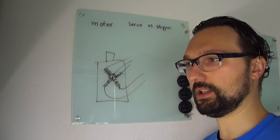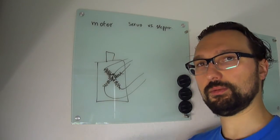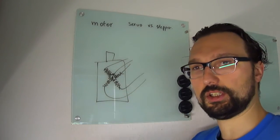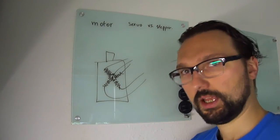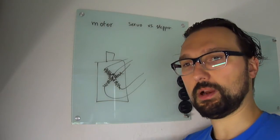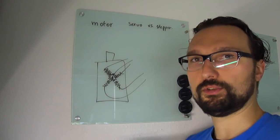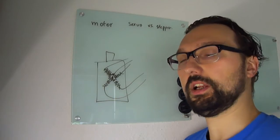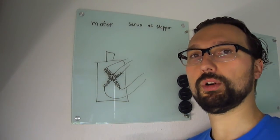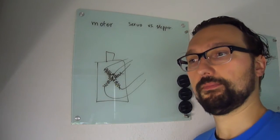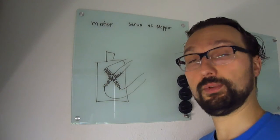The disadvantage of this way is that you have no absolute reference to where you are. So basically when the whole system starts you say well this is the zero position, and then you do step forward, step forward, step forward, step backwards, step forward. And by keeping track of the amount of steps you did you should be able to track where the motor is, but there's no actual feedback in this system. So this is called an open loop system.